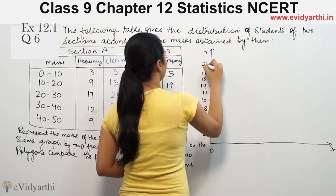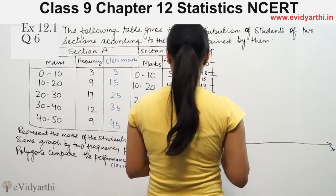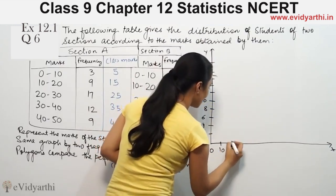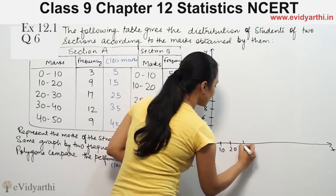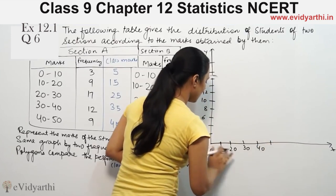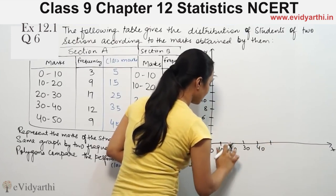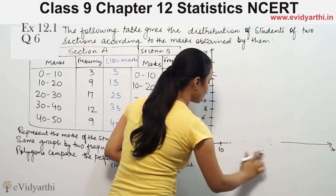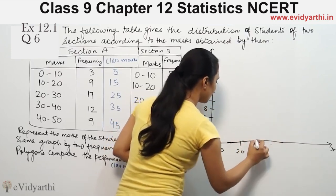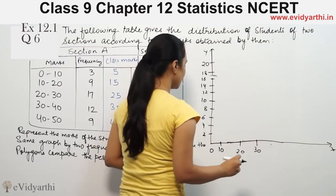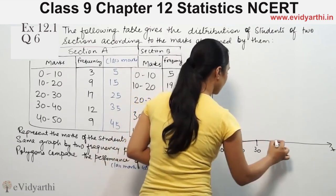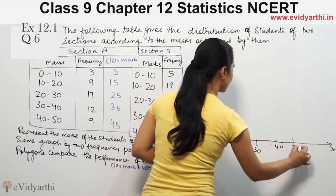18 and this is 20. Now the x-axis values are 10, 20, 30, 40, this is 10, 20, 30, 40, and this is 50.